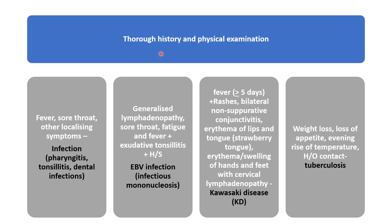According to history and physical examination: if the patient has fever, sore throat, and localizing symptoms such as pain in the tonsil, pharynx, or teeth — for example in pharyngitis, tonsillitis, or dental infection — the patient will have cervical lymphadenopathy with these symptoms. If there is generalized lymphadenopathy with sore throat, fatigue, fever, exudative tonsillitis, and even hepatosplenomegaly, then Epstein-Barr virus infection or infectious mononucleosis should be considered.